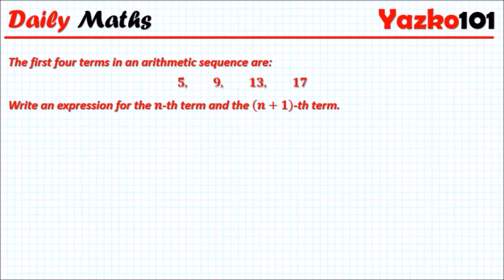So in this daily math episode we have the first four terms in an arithmetic sequence and they're given by 5, 9, 13 and 17. And the question tells us to write an expression for the nth and the (n+1)th term.